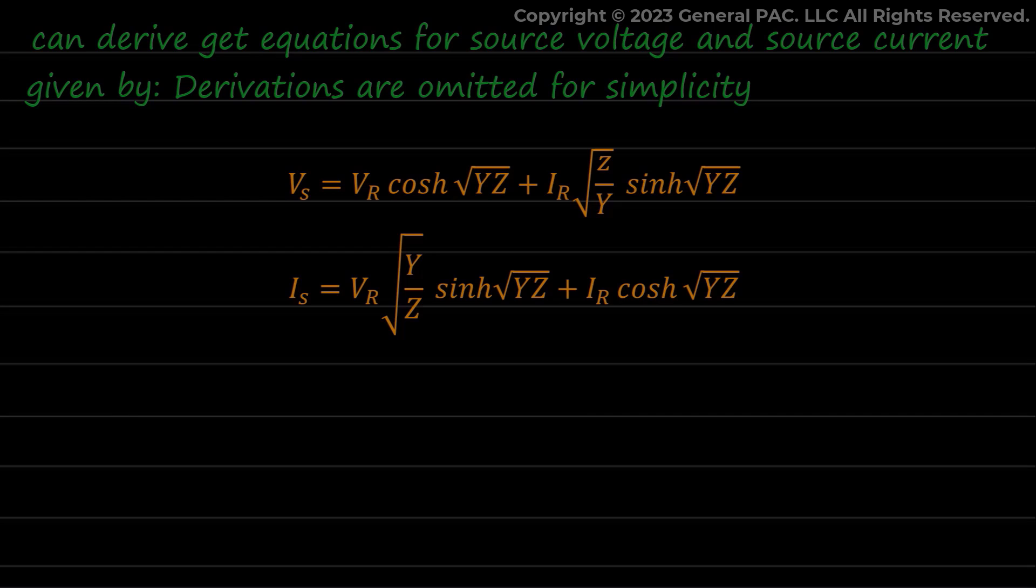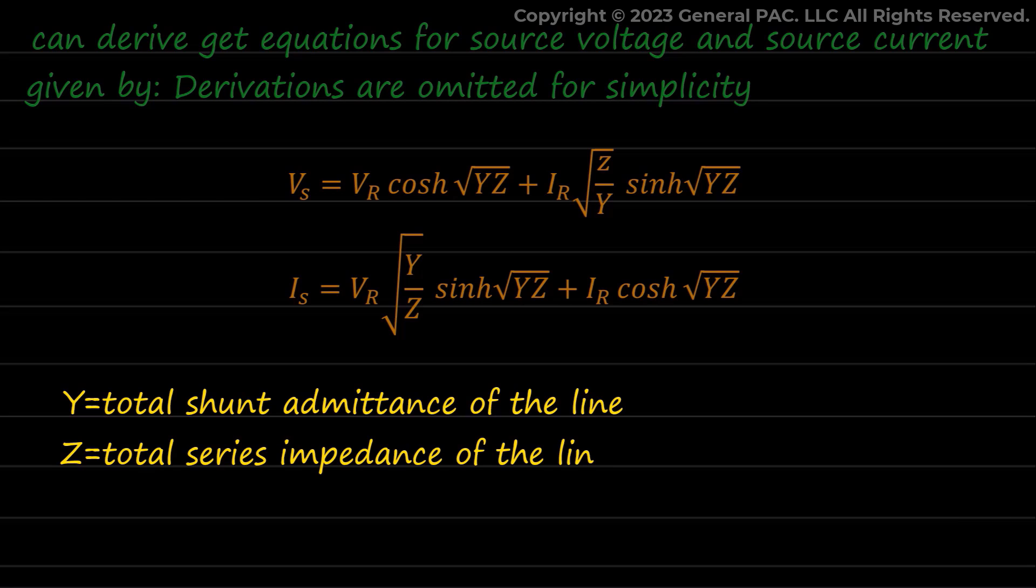Where Y is total shunt admittance of the line and Z is total series impedance of the line. So for detailed derivations and calculations, you can refer to chapter 10 of Principles of Power Systems by VK Mehta.